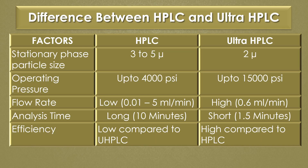First, the particle size of the stationary phase used in HPLC is 3 to 25 micron, and the particle size of the stationary phase used in Ultra HPLC is 2 micron. The operating pressure of HPLC is up to 4000 psi.